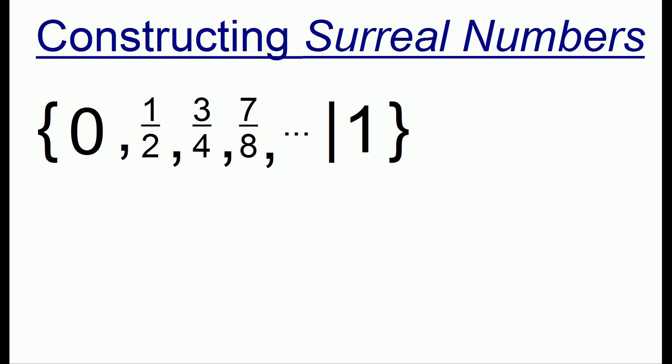So this is another valid surreal number and this number is going to be defined so that it's greater than every positive number that's less than 1 but it's still less than 1, and this number will exactly be 1 minus epsilon and you can think about it as 0.9 repeating.